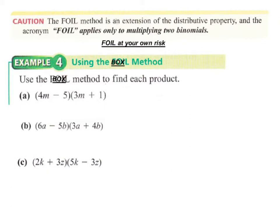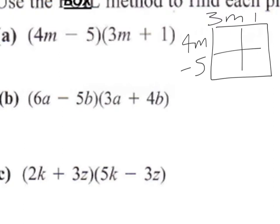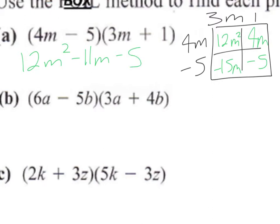For 4M minus 5 times 3M plus 1, I set up a 2×2 box with the first binomial on the left and the second on the top. The products inside are 12M squared, 4M, negative 15M, and negative 5. Combining: 12M squared minus 11M minus 5.